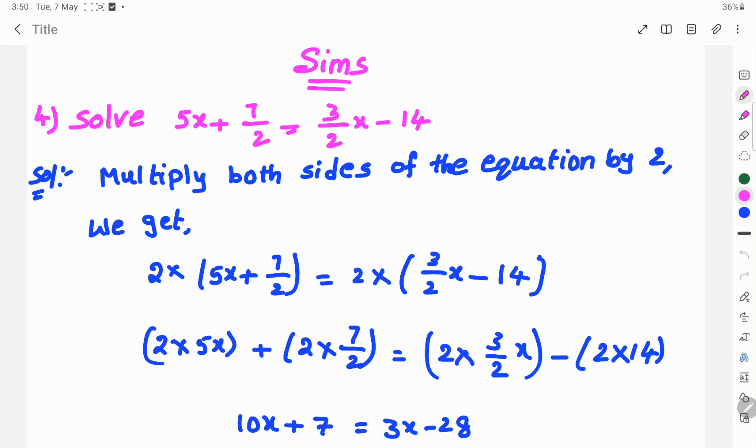So, let's see the solution. Multiply both sides of the equation by 2. So, 2 into 5x plus 7 by 2 equals 2 into 3 by 2x minus 14.